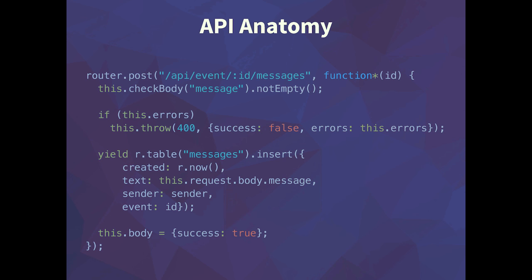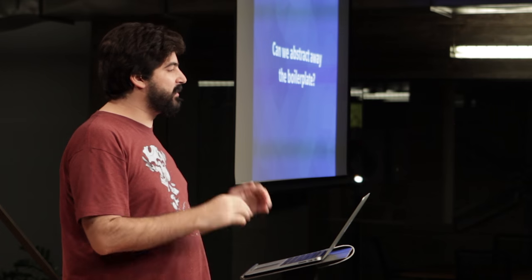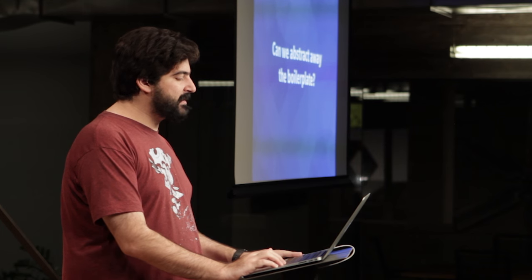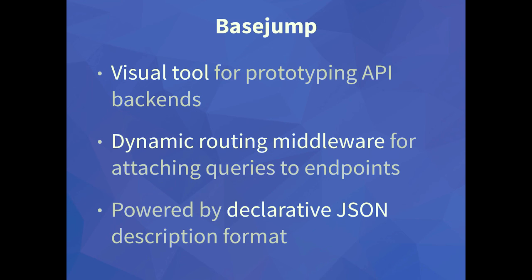Especially when you're prototyping — what if I could just shorten that distance? What can I do to abstract away the boilerplate? What I really want is just to go from request to database — shorten the distance between those two points. That was kind of where this idea came from. What I want to do is attach a query to a URL endpoint. So I built this tool called BaseJump that's designed around this concept. It is a visual tool that allows you to rapidly prototype API backends. It has a graphical interface you can access in the browser where you define all of your endpoints and associate queries with them. It's implemented as a dynamic routing middleware, and under the hood it's powered by a declarative JSON format that describes all of the routes.